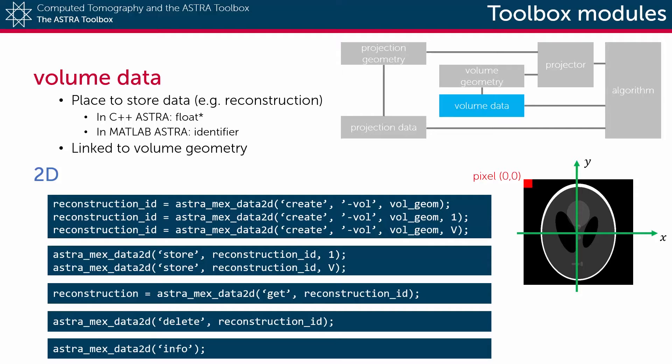For example, to create a new volume data object in the Astra memory, the first argument should be create, followed by a second argument telling the toolbox that it is volume data, and by the volume geometry which tells the toolbox its size.